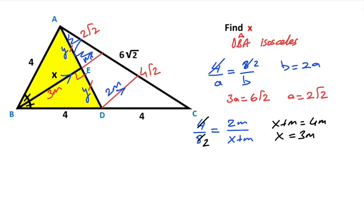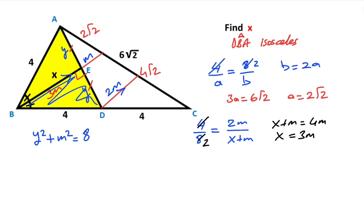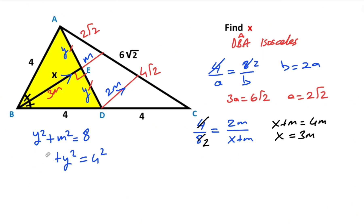After that, let's call these two equal sides Y. Therefore for this triangle, if you apply the Pythagorean theorem, we get Y squared plus M squared equals (2 root 2) squared. You know that (2 root 2) squared equals 8. And for this triangle, if you apply the Pythagorean theorem: (3M) squared plus Y squared equals 4 squared. (3M) squared equals 9M squared and 4 squared equals 16.